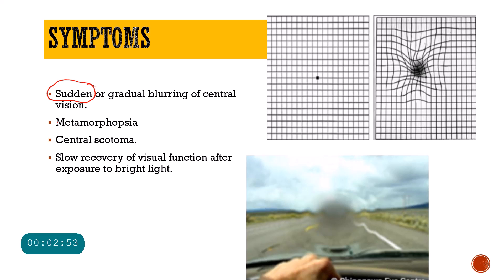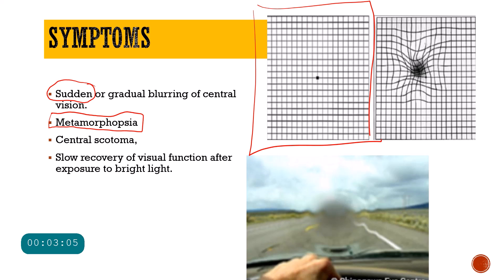Apart from that, the patient will have metamorphopsia. This can be tested on an Amsler grid test. On the Amsler grid, the lines usually look straight vertically and horizontally. However, if the patient has a choroidal neovascular membrane, the lines will look distorted. This distortion of straight lines into wavy patterns is known as metamorphopsia, and this is seen in age-related macular degeneration specifically when the macula is involved with the development of a choroidal neovascular membrane.